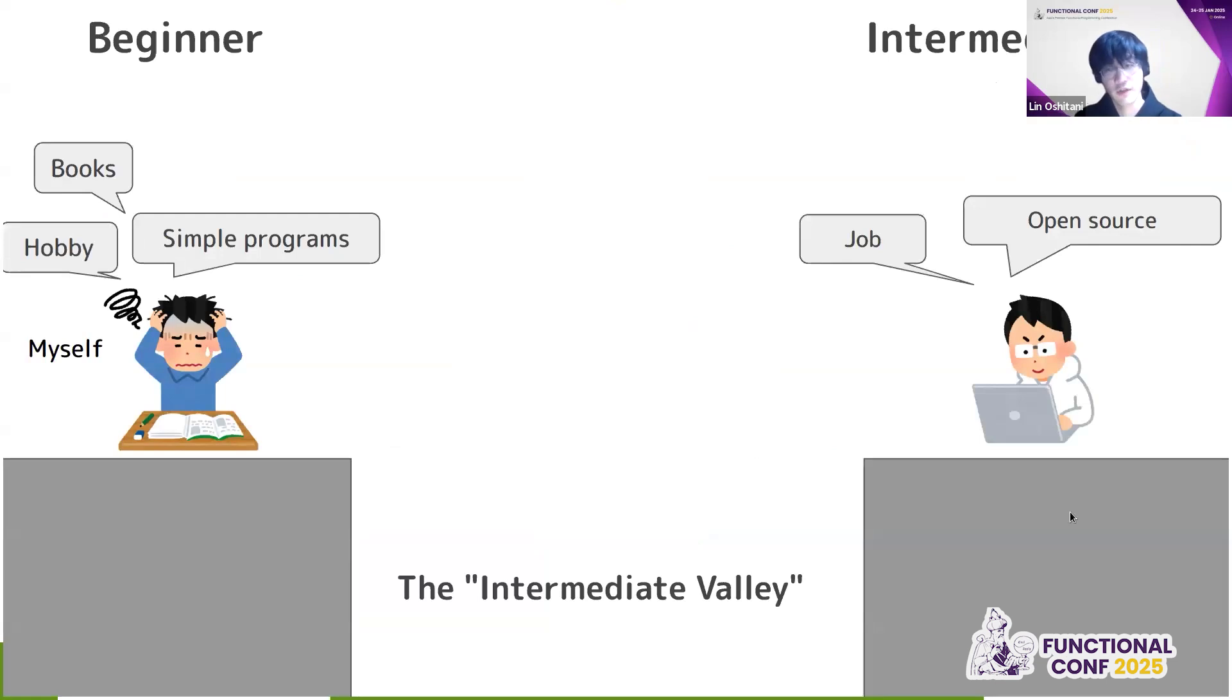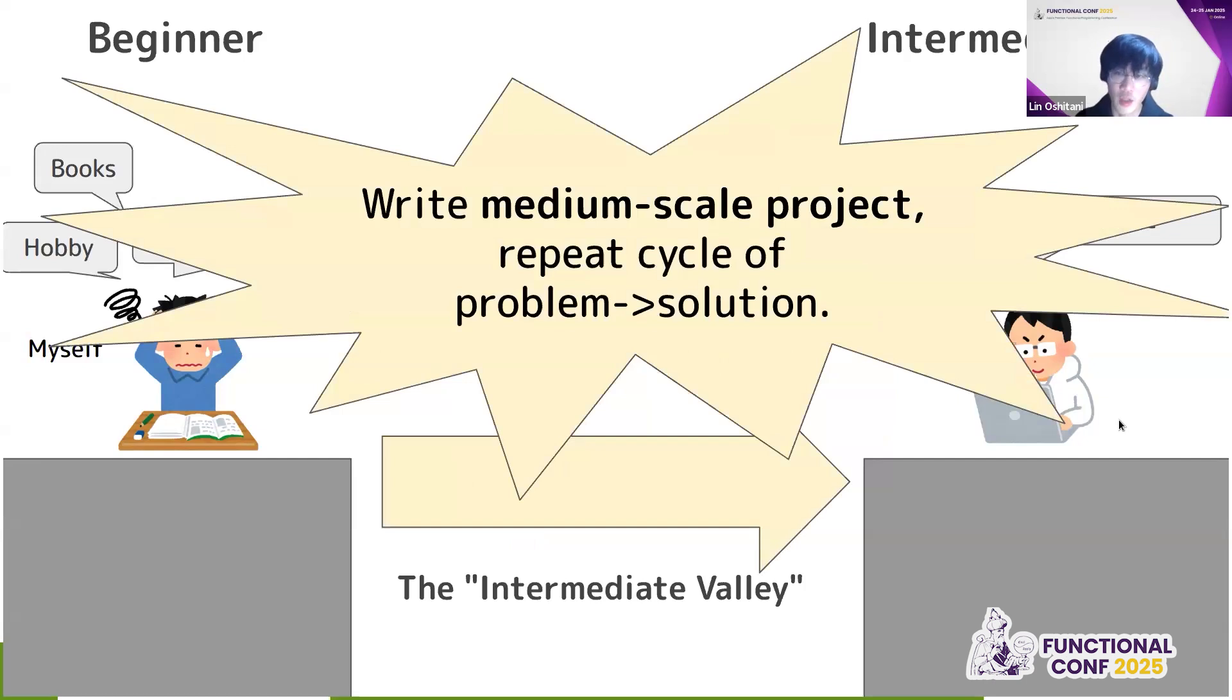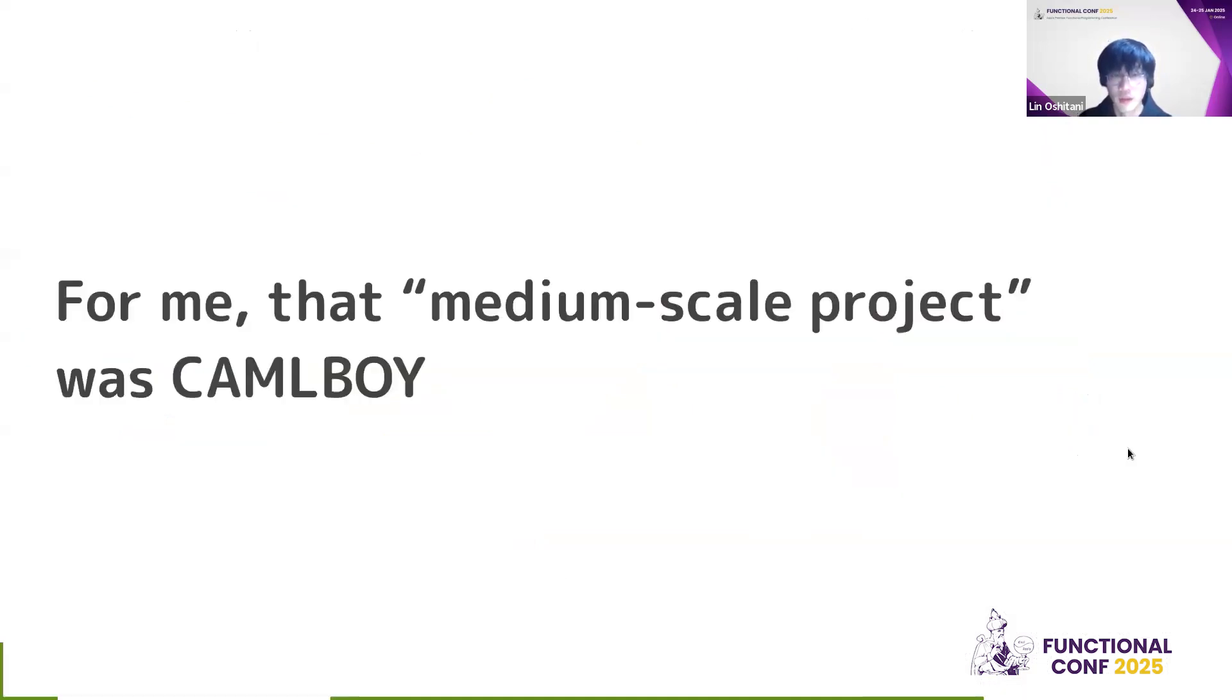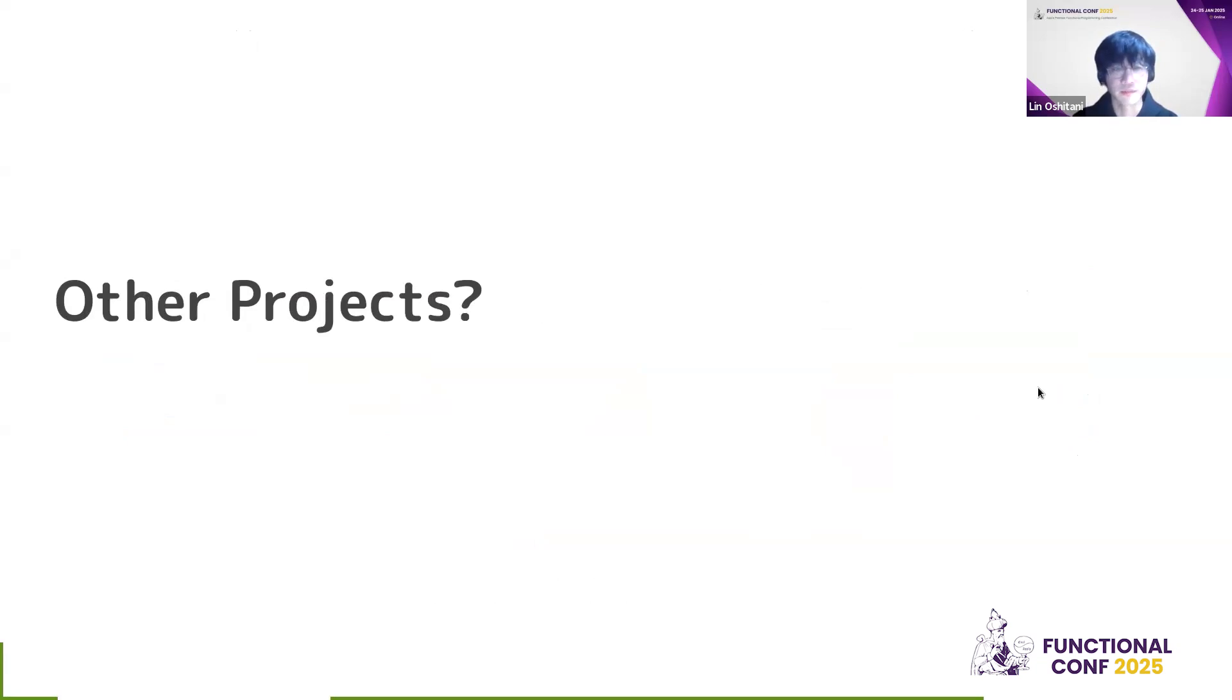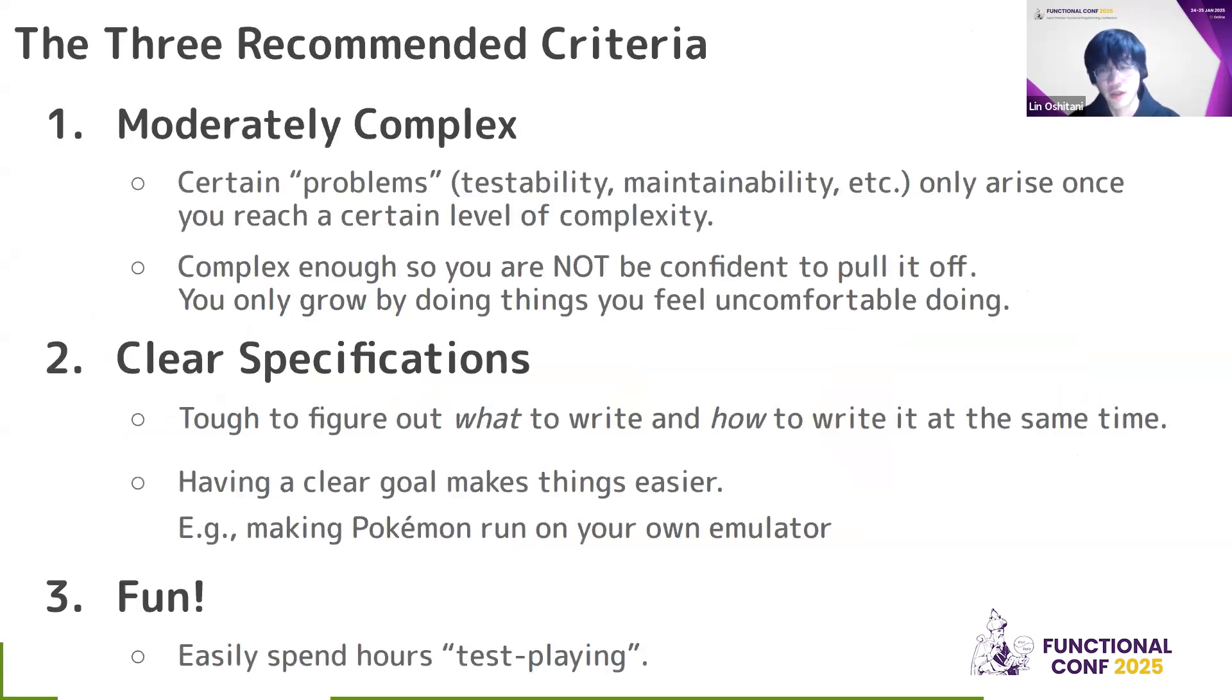Conclusion. So as I mentioned before, I was sort of going with the intermediate valley as a beginner. And how to overcome this valley? How do you become an intermediate or pro OCaml user? And I think the only way is to write a medium scale project and repeat the cycle of problem and solution, as I mentioned before. I think this is the only way you can actually get proficient in a language. And for me, that medium scale project was Camel Boy. But there are probably other projects that can do the similar role.